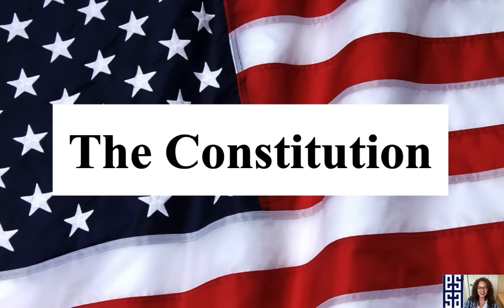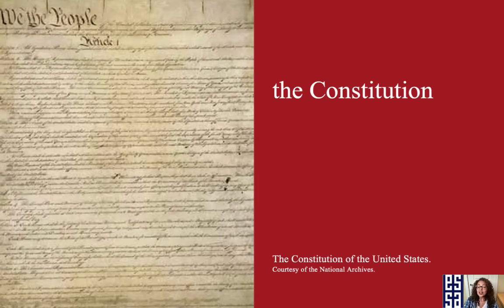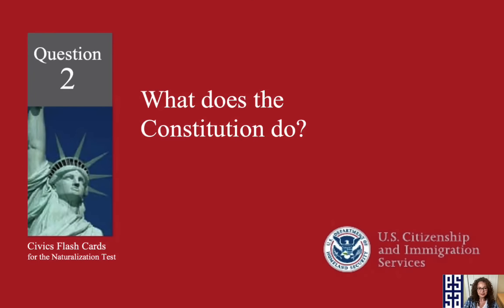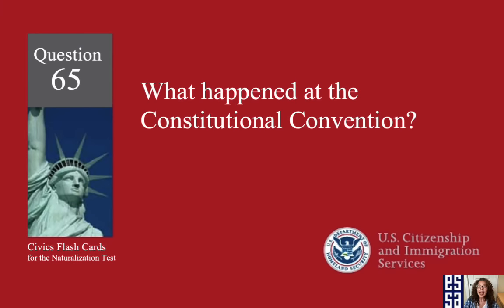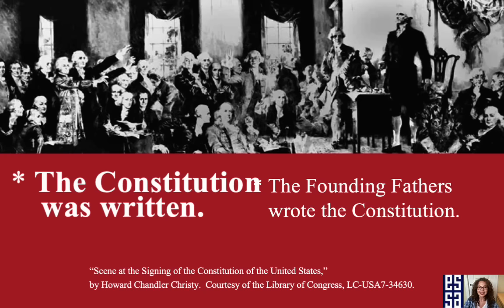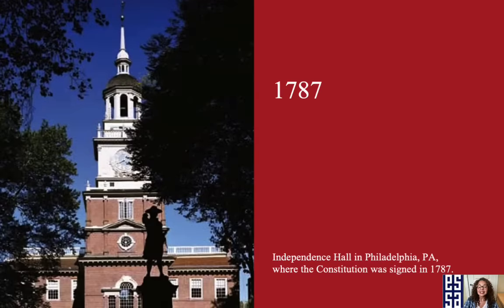Now we're going to move on to the Constitution. The Declaration of Independence was about getting free from Great Britain, and now we need to set up our government with the Constitution. What is the supreme law of the land? The Constitution. What does the Constitution do? It sets up the government. What happened at the Constitutional Convention? The Constitution was written. When was the Constitution written? In 1787.